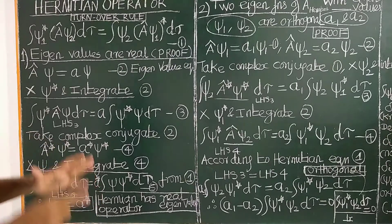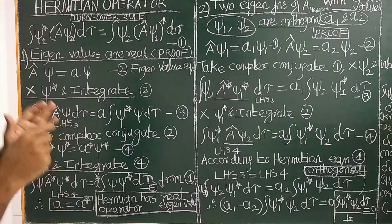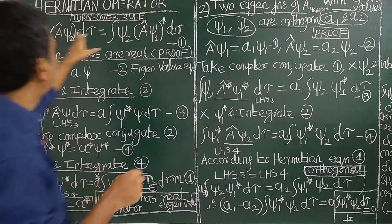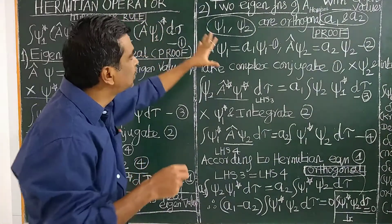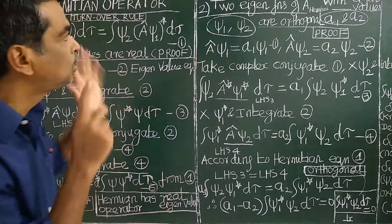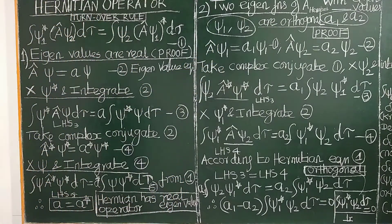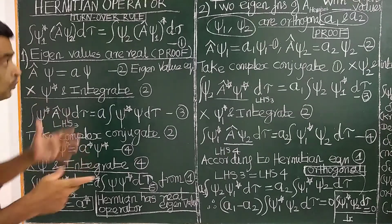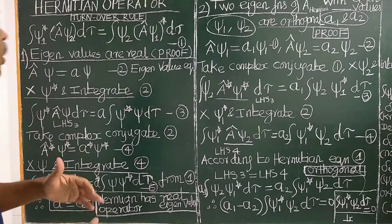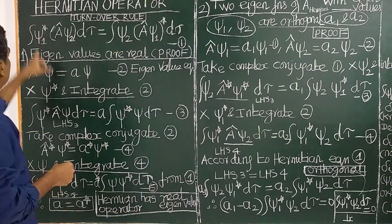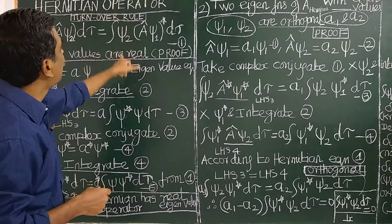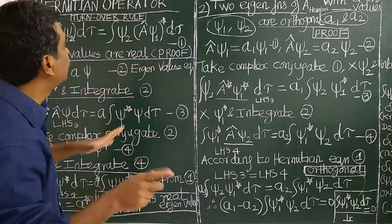Let us now discuss the important properties of Hermitian operators. There are two important properties of Hermitian operators, along with their proofs. The first property is: the eigenvalues of a Hermitian operator are real.